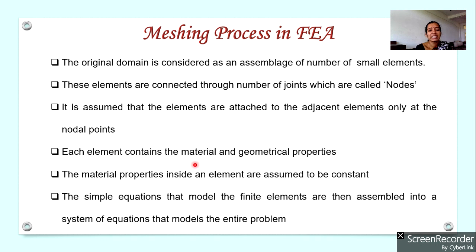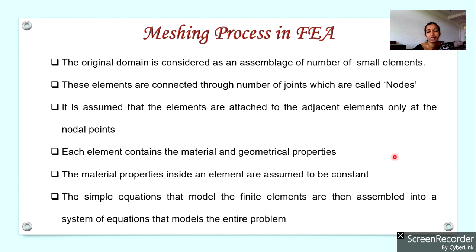Each element contains material and geometrical properties, such as tensile strength, compressive strength, and elasticity. The material properties inside an element are assumed to be constant — for example, elasticity and tensile strength are constant within a particular element. This allows us to use simple algebraic equations to represent each element. All these equations can be individually solved, and by combining the solutions for each element, we can obtain the solution to the entire problem.